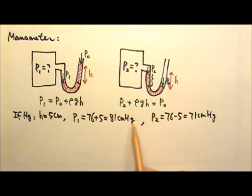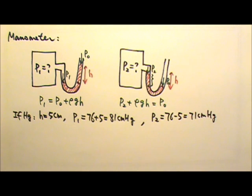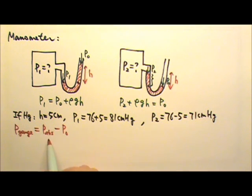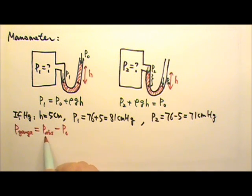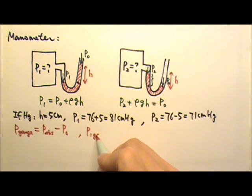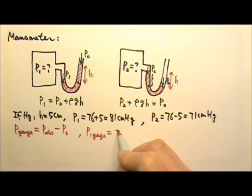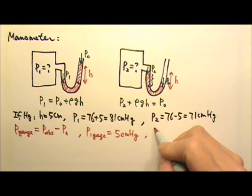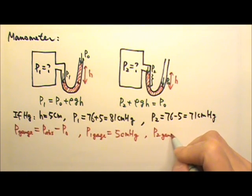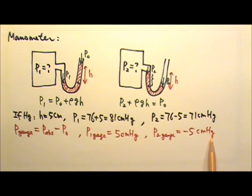The pressures we found here are absolute pressures — the real pressure. There is also gauge pressure, which is defined as the absolute pressure minus the atmospheric pressure. So gauge pressure is how much higher the pressure is than atmospheric. For P1, the gauge pressure is positive 5 centimeter mercury. Since P2 is actually lower than atmospheric pressure, P2's gauge pressure is negative 5 centimeter mercury.